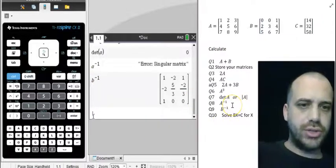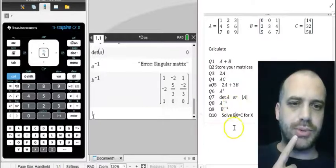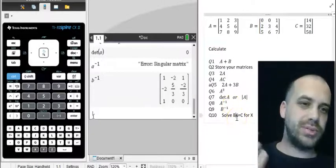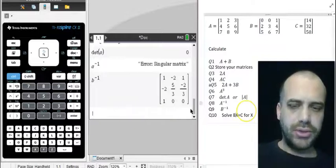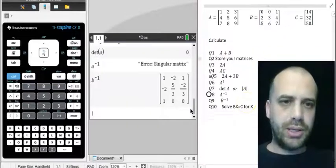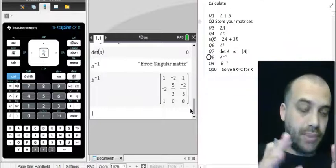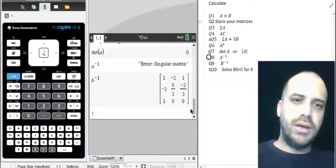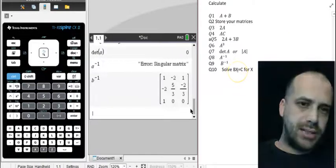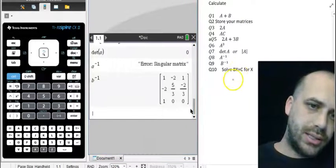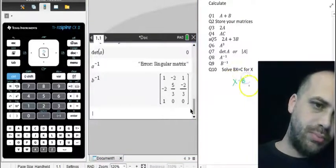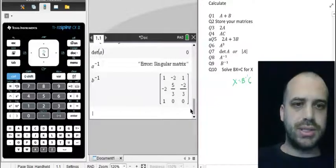So the last question I've changed to solve Bx equals C for x because Ax equals C wasn't going to work. All right, so how are we going to do that? Well, we need to know a little bit of maths. We're going to have to do a little bit of something. If we rearrange this to make x the subject, we're going to get x equals inverse B times C.